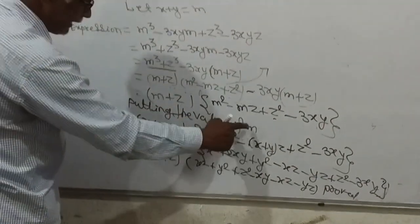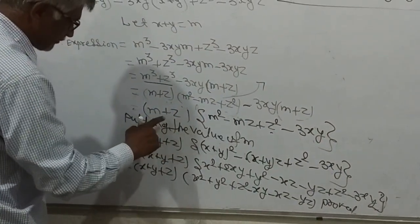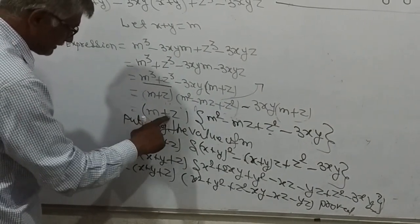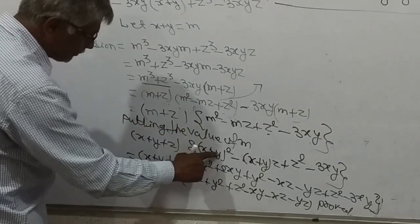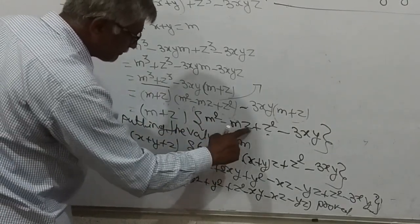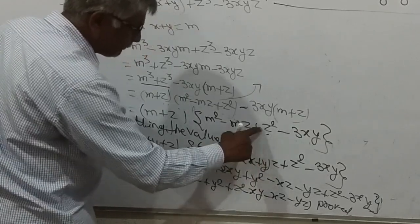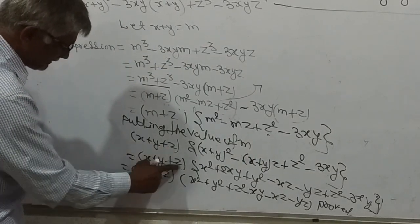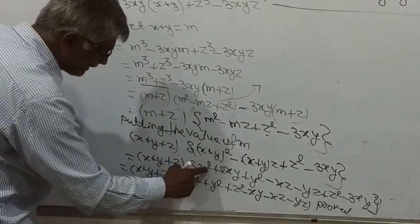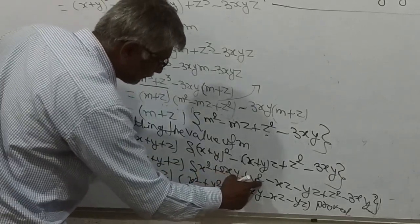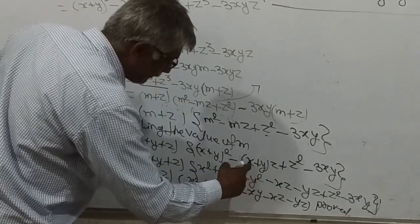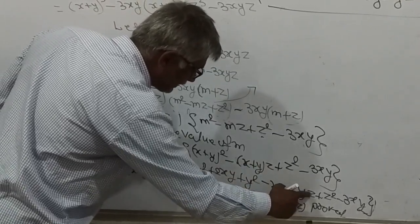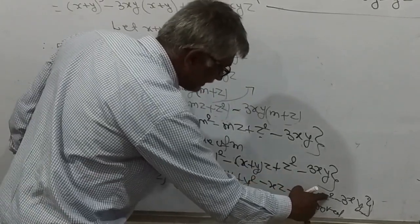Now putting m = x + y back: (x + y + z) into [(x + y)² − (x + y)z + z² − 3xy]. Expanding (x + y)² gives x² + 2xy + y². Then minus (x + y)z gives −xz − yz, plus z².